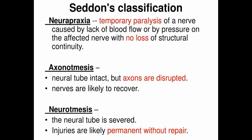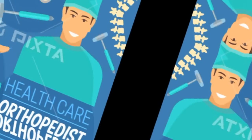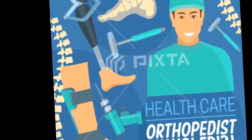Neuropraxia, axonotmesis, and neurotmesis all include no Wallerian degeneration at the injury site in different ways. However, neuropraxia shows positive and negative sensory symptoms and positive and negative autonomic nervous system involvement, while axonotmesis and neurotmesis contain none of the sensory and autonomic system activity distally. Furthermore, there is no fibrillation in neuropraxia, while the other two types do show fibrillation.